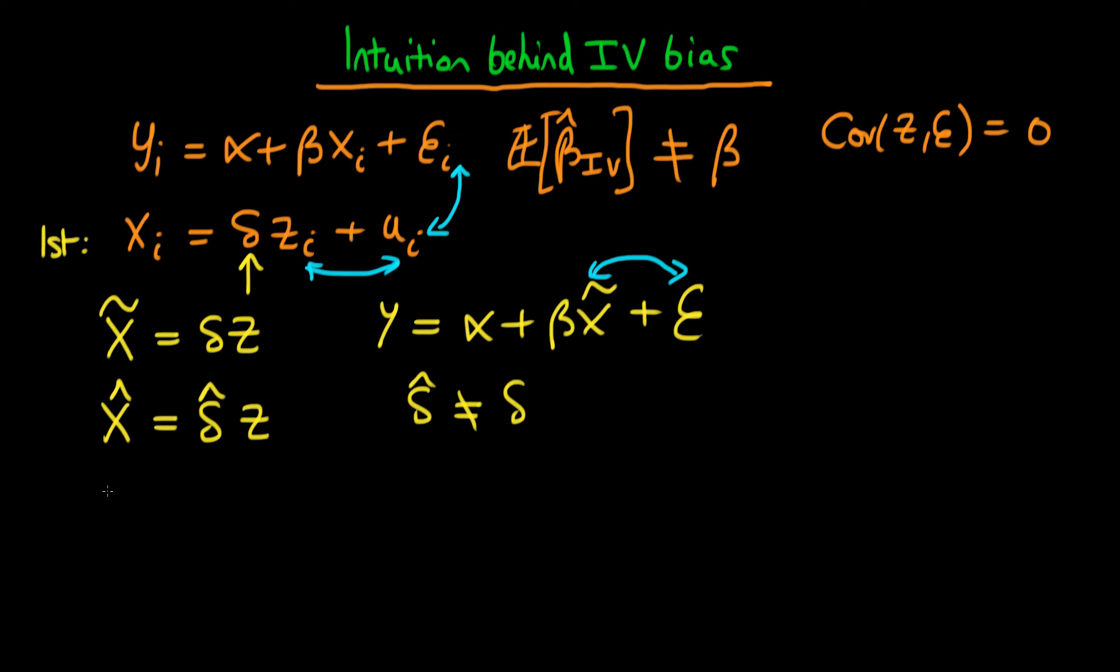And because of that, we have in general that x hat, our practical estimators for x which we get from our first stage regression, don't equal x tilde, which are those values which we would get if we knew delta exactly. And the difference between these two things is due to sampling error.